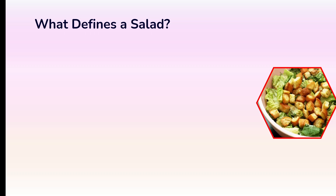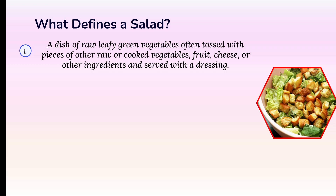What defines a salad? If I ask you all to define the word salad, you will probably be scratching your head to give one definite explanation, because it has got a multifaceted explanation. Let us explore these points one by one from different angles. First, it can be called a dish of raw leafy green vegetables often tossed with pieces of other raw or cooked vegetables, fruit, cheese or other ingredients, and served with a dressing such as mayonnaise.